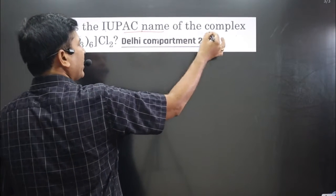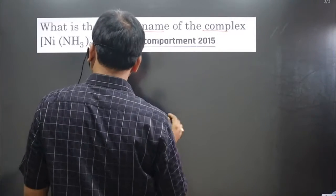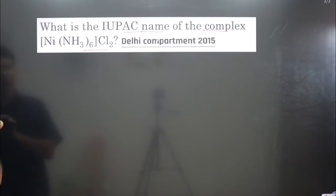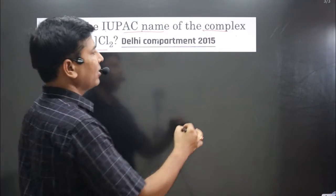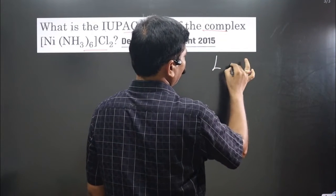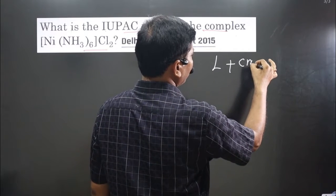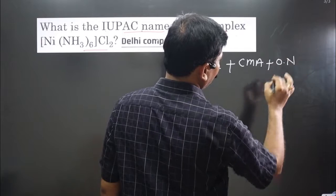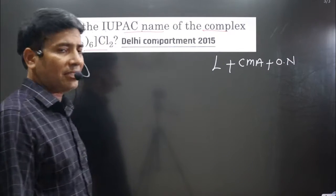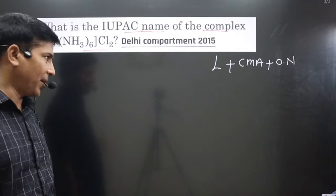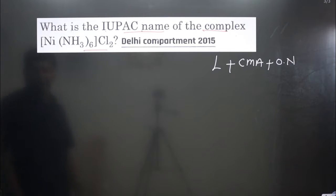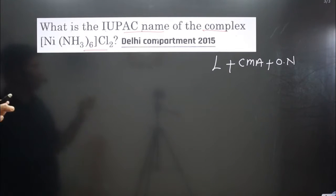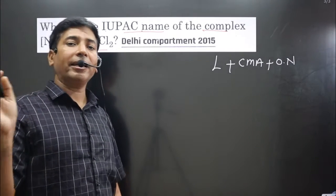The question asks for the IUPAC name of the given complex. To name a complex, we follow this order: first write the ligands, then the central metal atom, and then the oxidation number in Roman numerals. This is the order we follow.